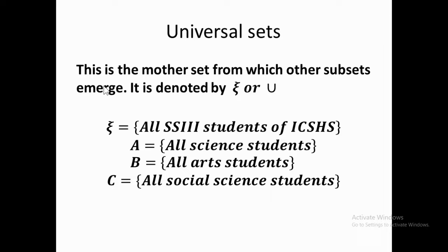The universal set is the mother set from which other subsets emerge. When I have a set with some elements, and I have other sets whose elements are also found in that first set, then that first set is called the universal set.